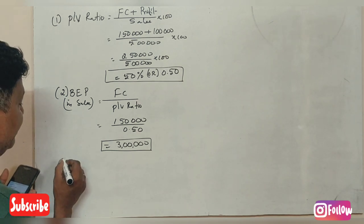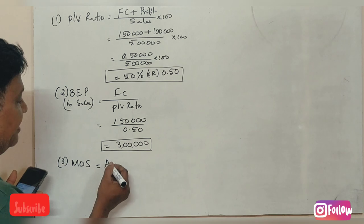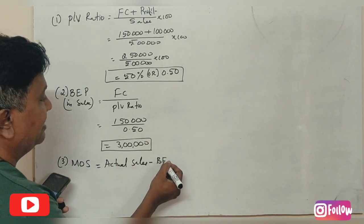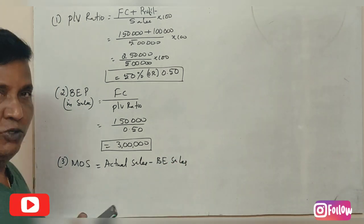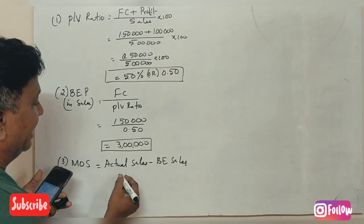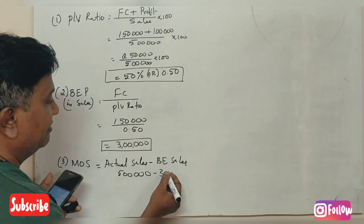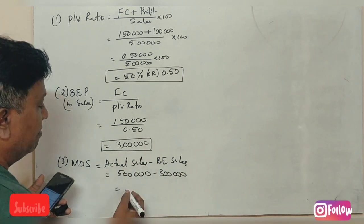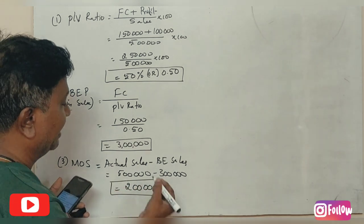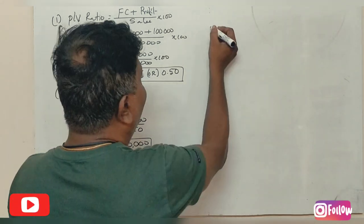Margin of safety — the formula is actual sales minus break-even sales. Actual sales are 5,00,000 rupees minus break-even sales of 3,00,000 rupees, giving a margin of safety of 2,00,000 rupees.